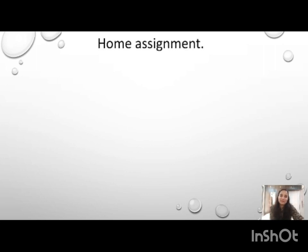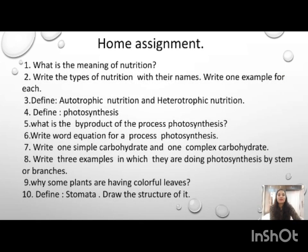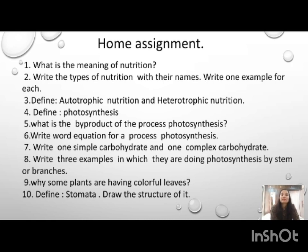This slide contains your home assignment. The questions are: first, meaning of nutrition; second, types of nutrition with names and one example each; third, definitions of autotrophic and heterotrophic nutrition; fourth, definition of photosynthesis; fifth, what is the by-product of photosynthesis; sixth, write the word equation for photosynthesis; seventh, one simple carbohydrate and one complex carbohydrate; eighth, three examples of plants doing photosynthesis by stem or branches; ninth, why some plants have colorful leaves; tenth, definition and structure of stomata.